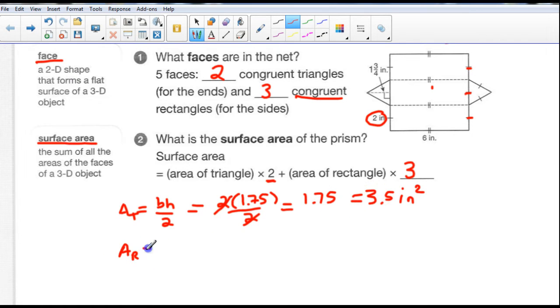Area of a rectangle is just equal to length times width. And our length is 6 and our width is 2, which is equal to 12. And we have three of them. So we just take 12 times 3 is equal to 36 inches squared total for the rectangles.